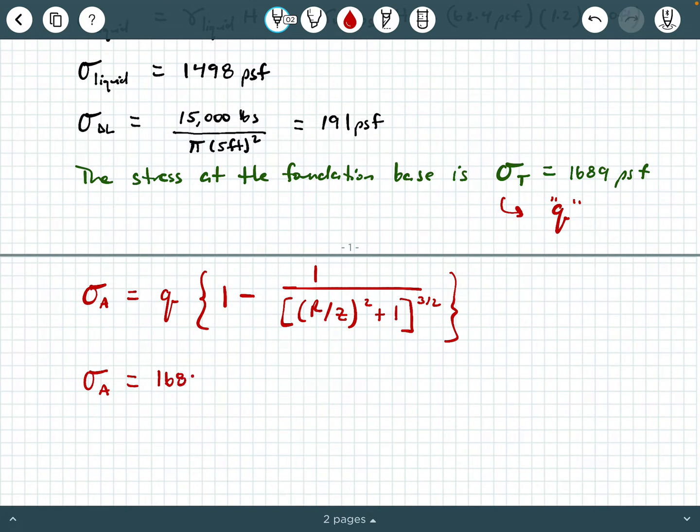So we can say 1689, open that brace up, one minus one over, the total radius is five feet, the depth we're interested in is three feet, so we're gonna have 5/3, and that'll be squared plus one, raised to the three halves power. Go ahead, maybe pause the video and punch this in your calculator. When I punch this through, I get about 1460 PSF, and that's the stress at point A, so that's one of my answers.